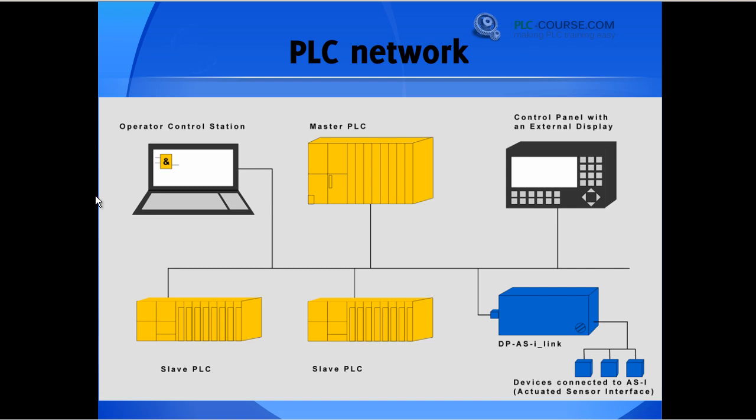To give you just a basic idea what a PLC network might look like, we will just briefly go over these elements in here. So we have an operator control station, a master PLC, two or more slave PLCs, a control panel with an external display - of course each of the PLCs can have its own external display - a DP ASI link and devices connected to it.